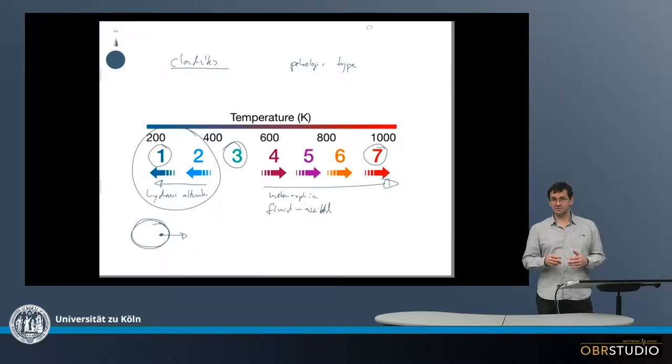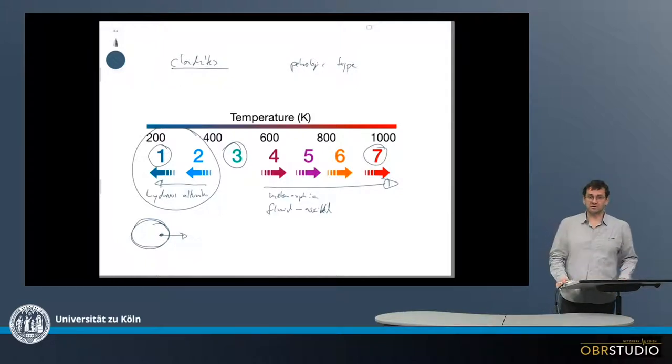The ordinary chondrites, the enstatite chondrites, they are very often of higher petrologic types like H5, H6, L5, L6. They are among the most abundant chondrites we have in collections, which is also why they are called ordinary chondrites. But there are also petrologic type 3 chondrites among the ordinary chondrites.